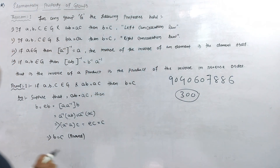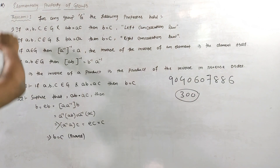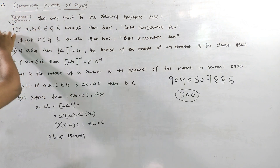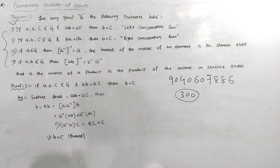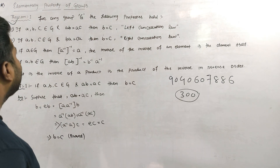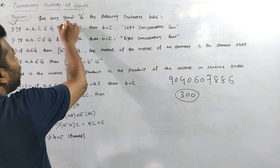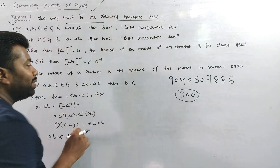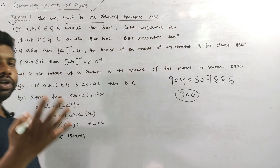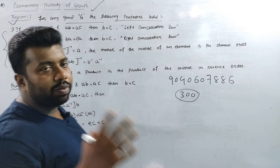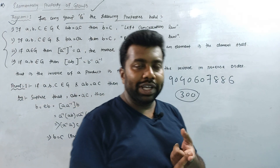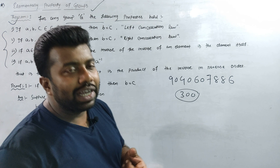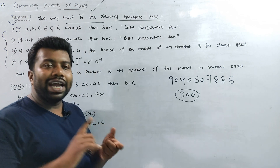Now, what is Elementary Property of Group? In this video, we have proof of the Charter Properties of Group. For any group G, the following properties hold. The Charter Properties of Group are: Closure Property, Associative Property, Inverse Property, and Identity Property.